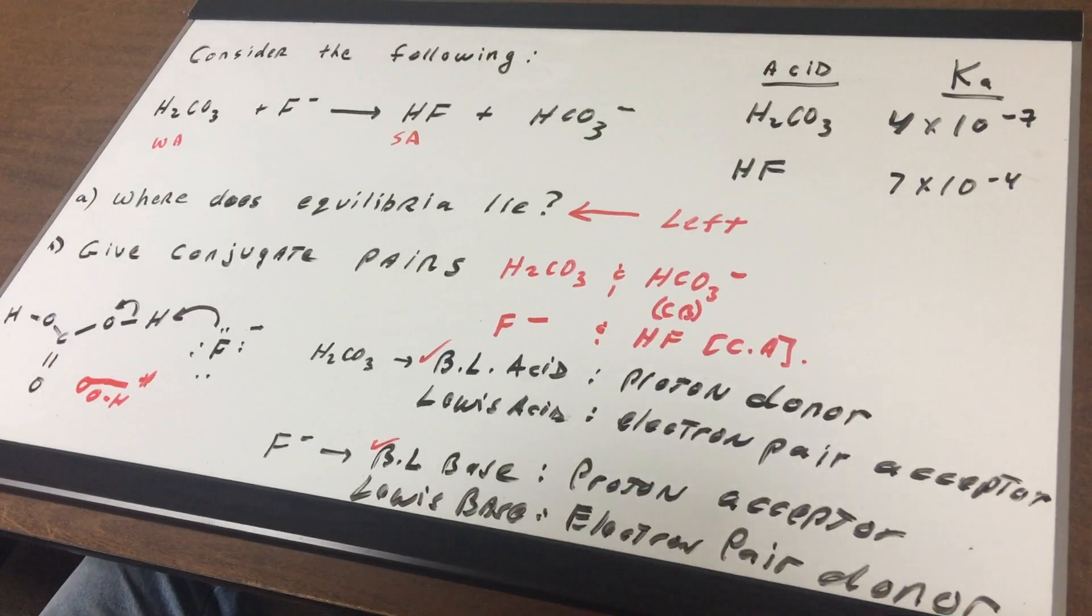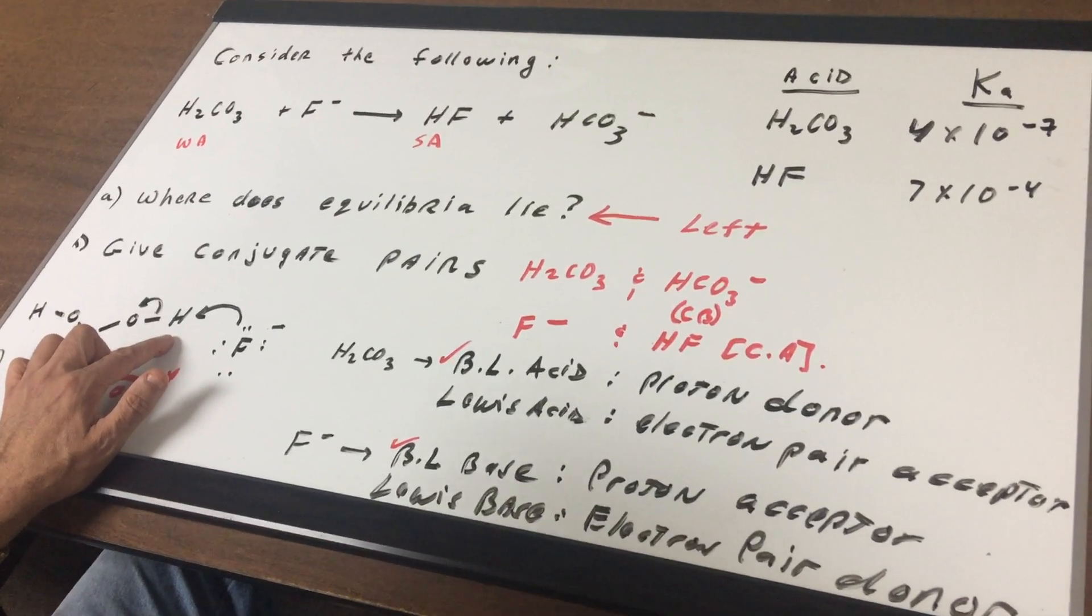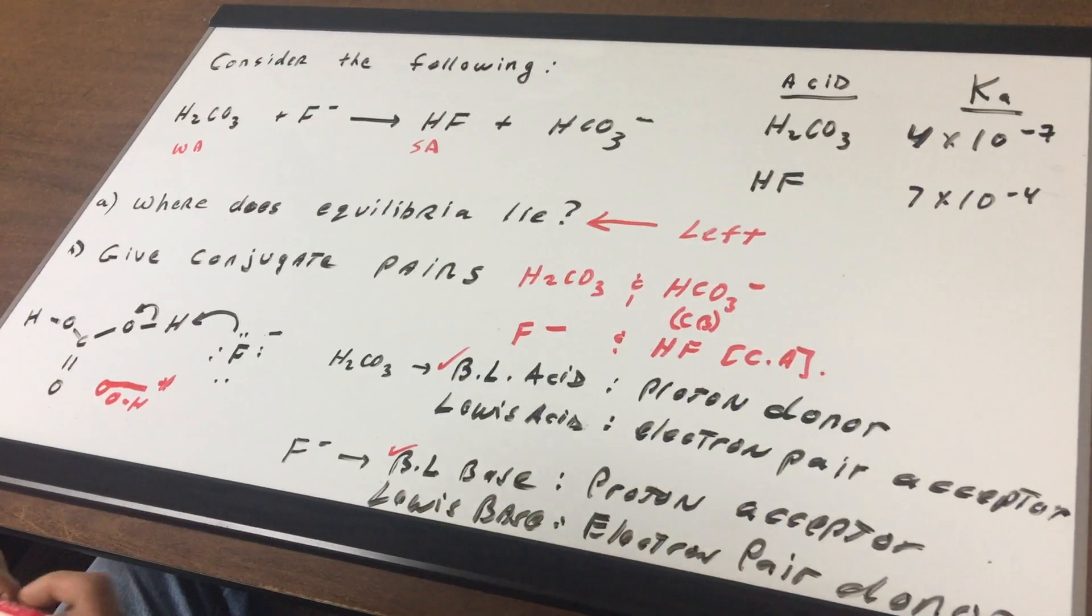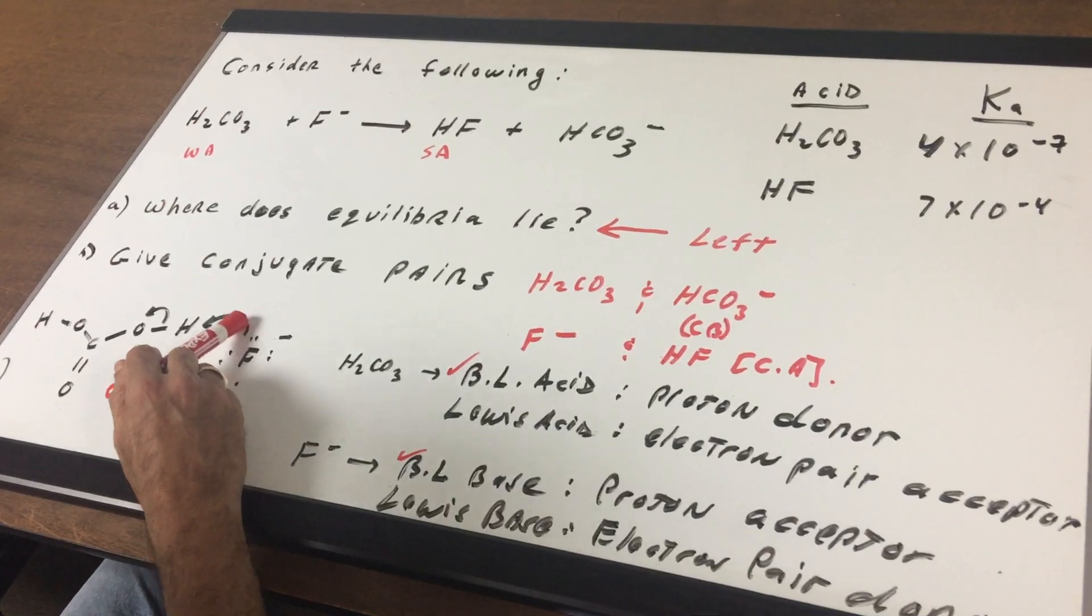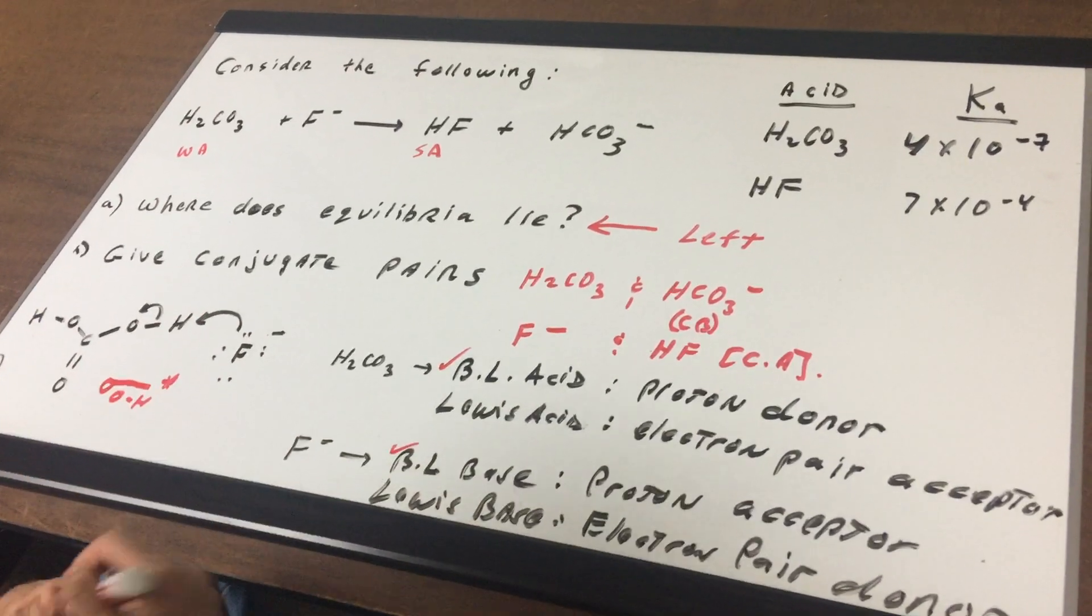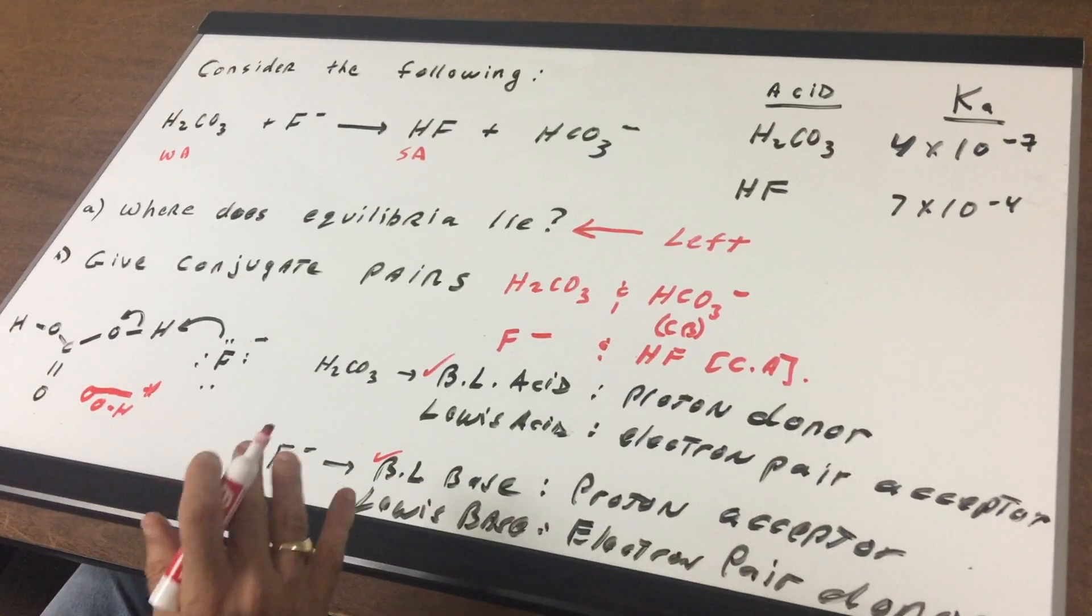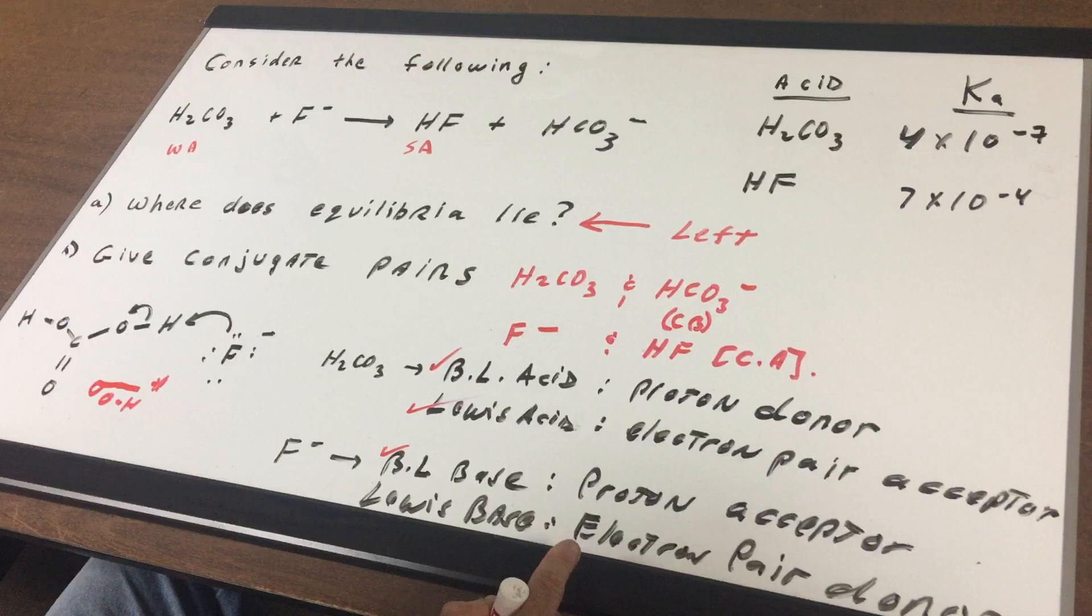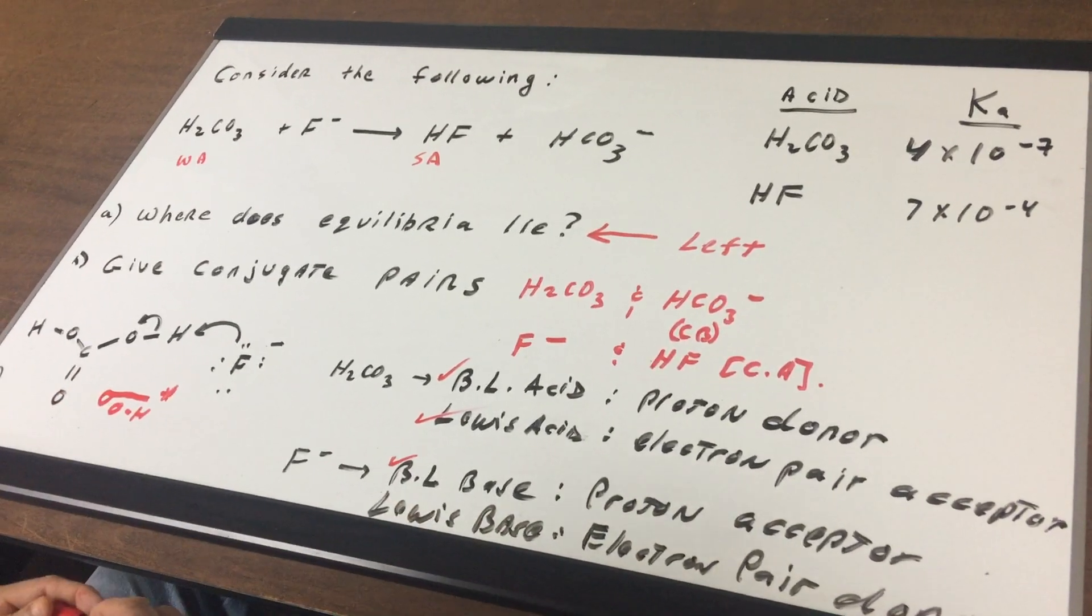Now, let's look at the Lewis theory. This would be a Lewis acid because, as you can see, it's accepting a pair of electrons. Notice that the fluoride ion is donating its electrons. So the guy that's accepting is the electron pair acceptor is the Lewis acid, and the species that is donating the electrons would be considered the Lewis base.